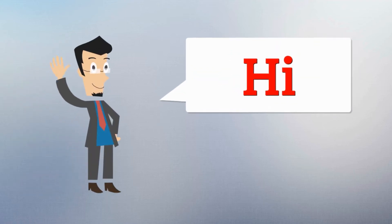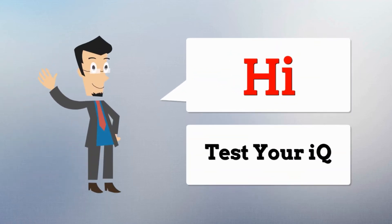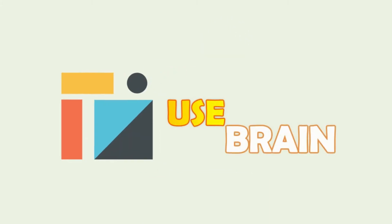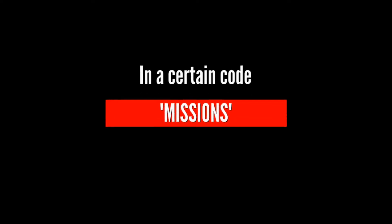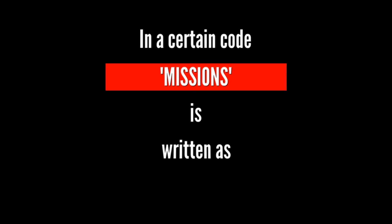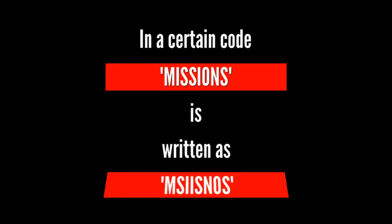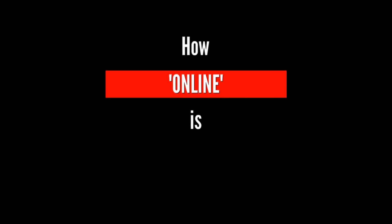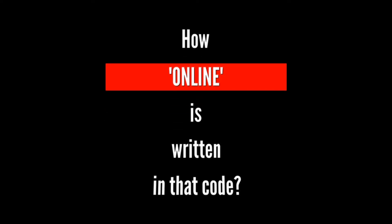Hi! Let's test your IQ today. In a certain code, 'Missions' is written as MSIISNOS. Then, how is 'online' written in that code?